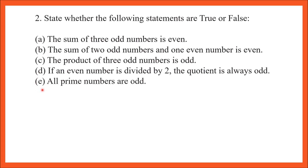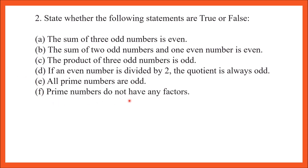Part E: all prime numbers are odd. This statement is not true because we have the prime number 2, which is not odd. Part F: prime numbers do not have any factors. This statement is true because prime numbers have only two factors — the number itself and 1 — and are not divisible by any other number.